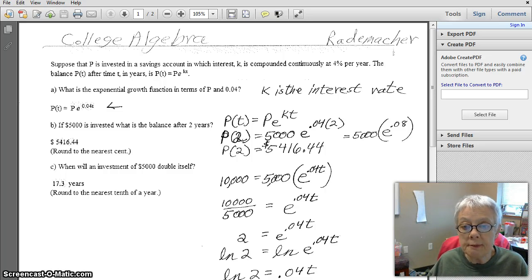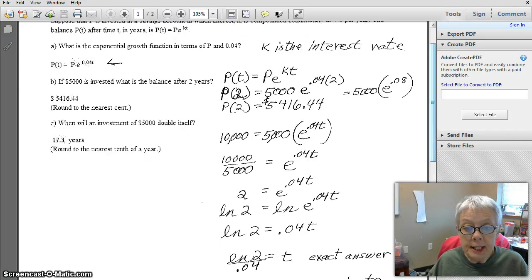The first thing we're going to do is divide both sides of the equation by 5,000. That will give us 2 equals e to the .04t. Then, to bring the T down, we'll take the natural log of both sides. We take the natural log of both sides because the ln of e is 1. And so what we discover is that the ln of 2 equals the ln of e to the .04t, and we have an identity that that will give us .04t. The ln of e to the .04t will give us .04t.